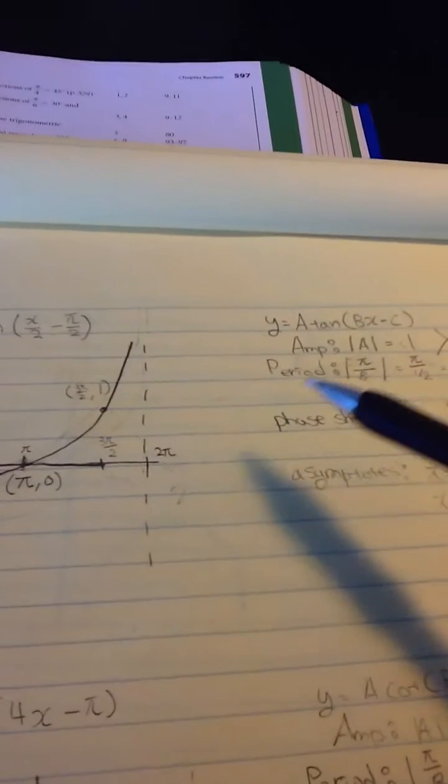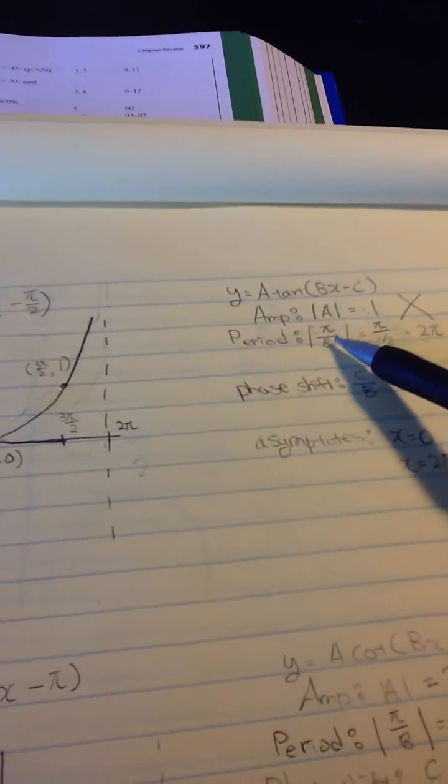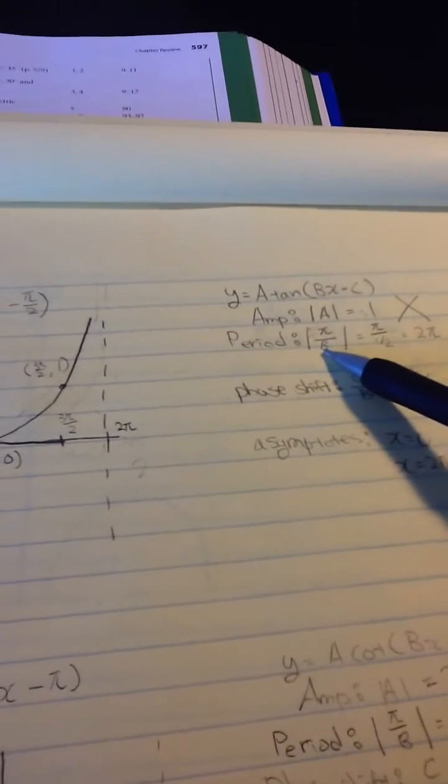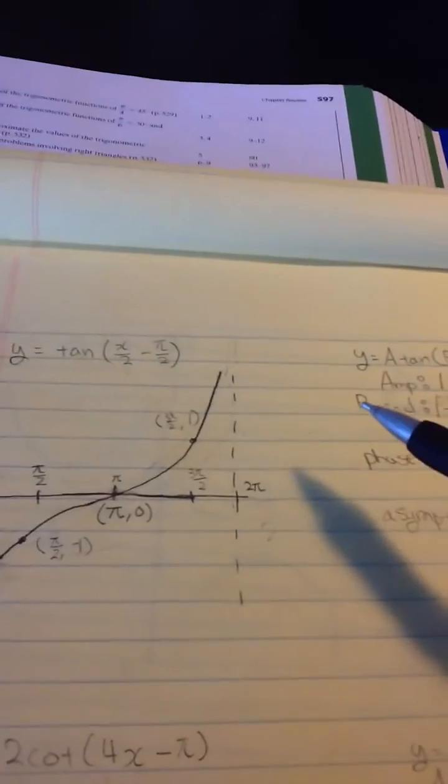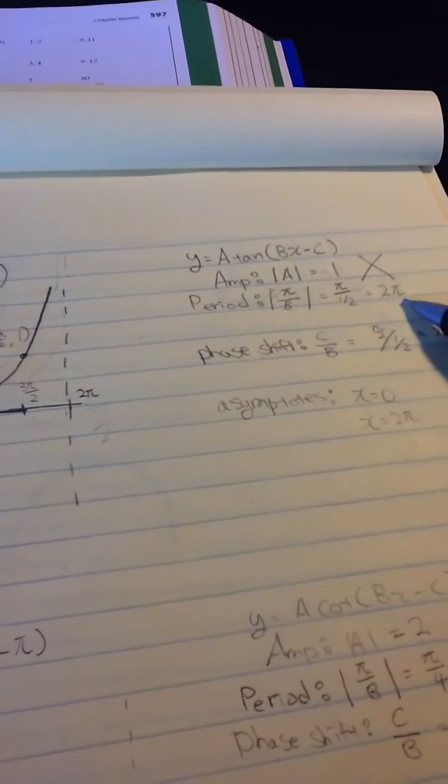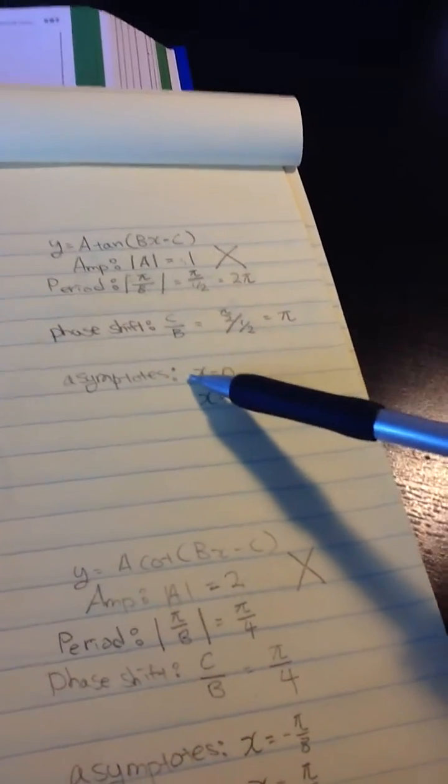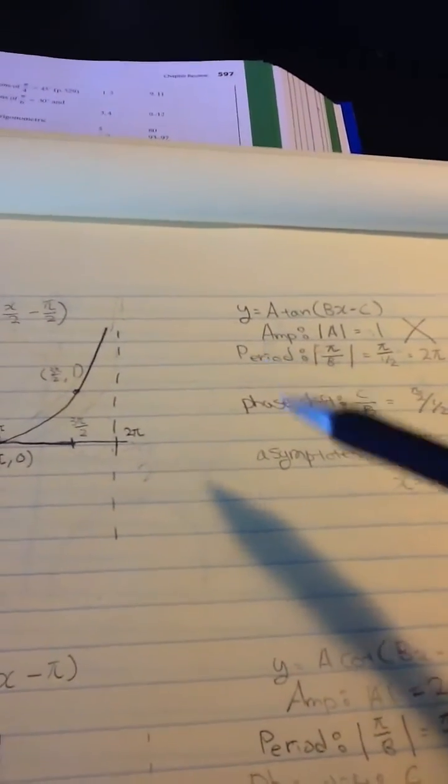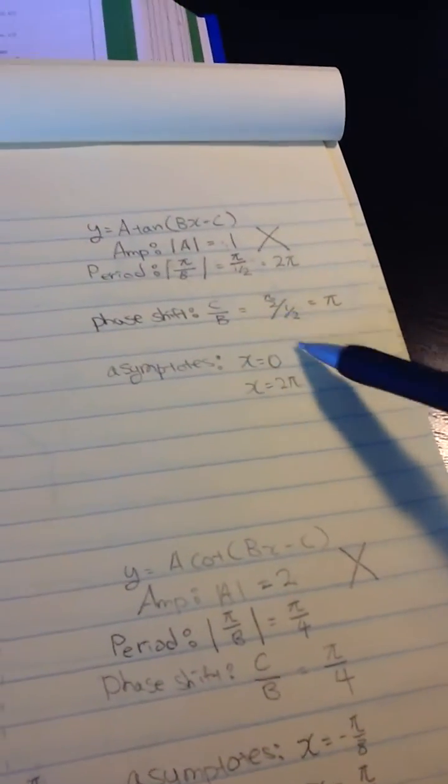Amplitude, which is a, is 1 in this function. Period, which is tangent period of pi, is pi over b, and b is 1 over 2. So for the period we have 2 pi. For phase shift, which is c over b, we have c as negative pi over 2 and b as 1 over 2, so phase shift is pi.